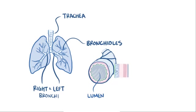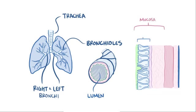In the bronchioles, you've got the lumen, the mucosa, which includes the inner lining of epithelial cells as well as the lamina propria, and the submucosa, which is where the smooth muscle lives.